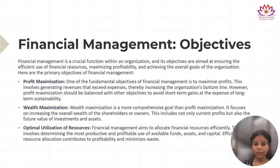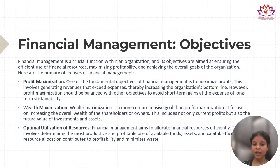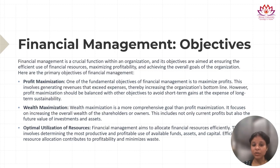Now, the objectives of financial management. Financial management is a very important function in an organization, and its objectives are aimed at ensuring the efficient use of financial resources, maximization of profits, and achieving the overall goals of the organization. The first objective is profit maximization, which is the primary objective. It involves generating revenues that exceed expenses to increase the organization's bottom line, though profit maximization should be balanced with other objectives to avoid short-term gains at the expense of long-term sustainability.